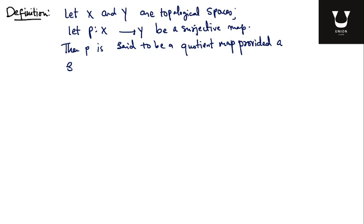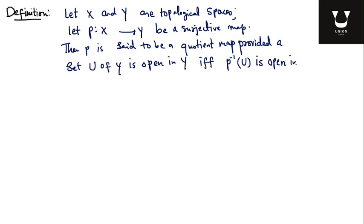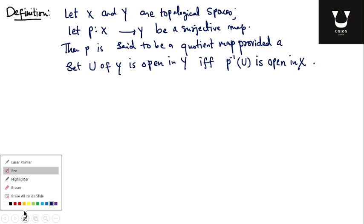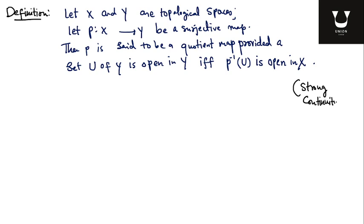Then p is said to be a quotient map provided that a subset u of y is open in y if and only if p inverse of u is open in x. Observe that every quotient map is continuous: if u is open in y then p inverse u is open in x. But p also satisfies one more condition: if p inverse u is open in x for some set u, then u is open in y. Some mathematicians call this strong continuity.